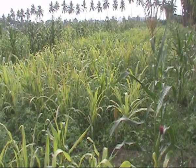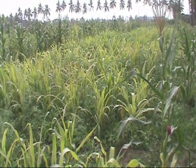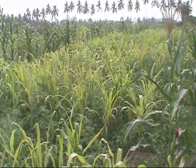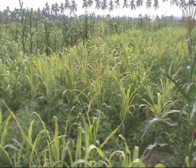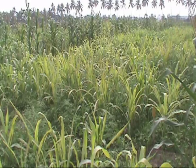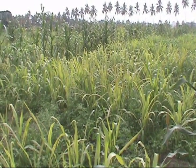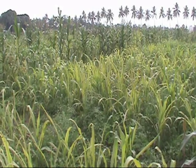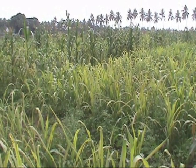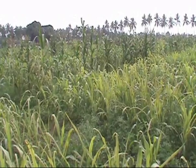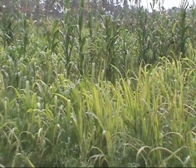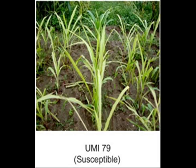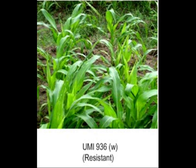Inbred lines showing reaction to SDM were selected and crossed to synthesize F1 hybrids. An F1 hybrid of a cross between a susceptible and a resistant inbred line is selected and selfed to produce the F2 population.